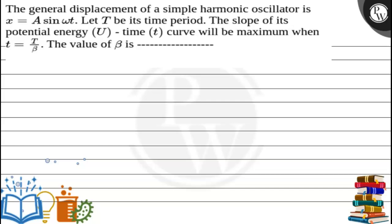Hello, in this discussion the general displacement of a simple harmonic oscillator is x equals A sin ωt. Let T be its time period. The slope of its potential energy U and time profile will be maximum when t equals T by β. We have to find the value of β.